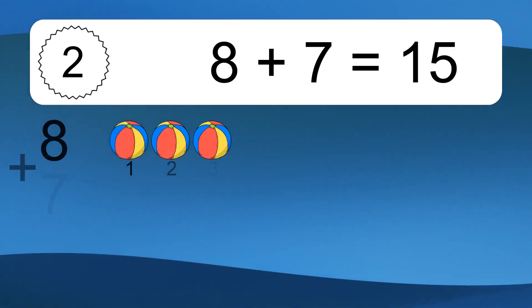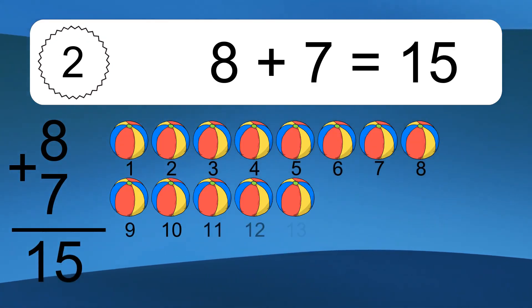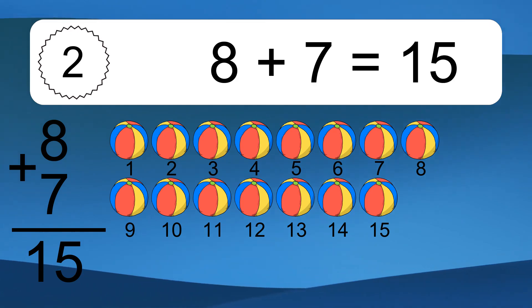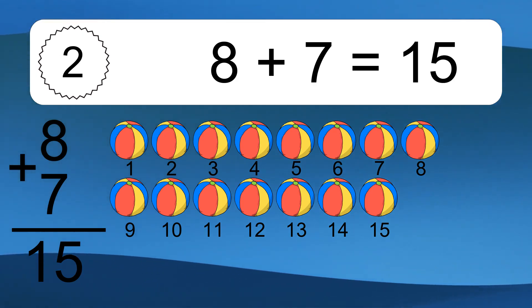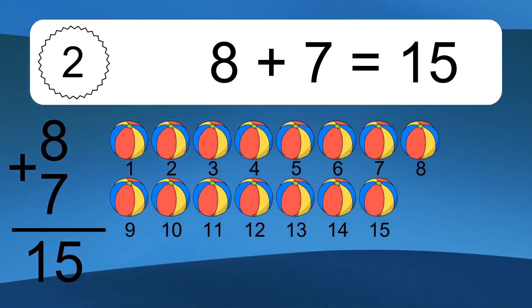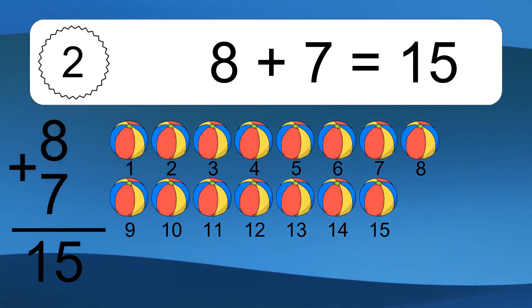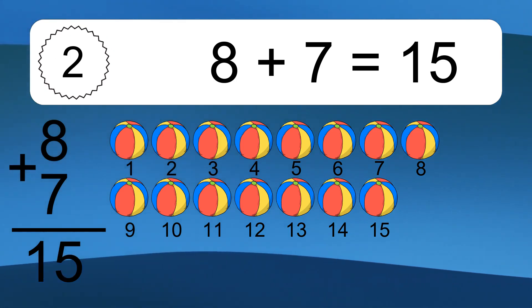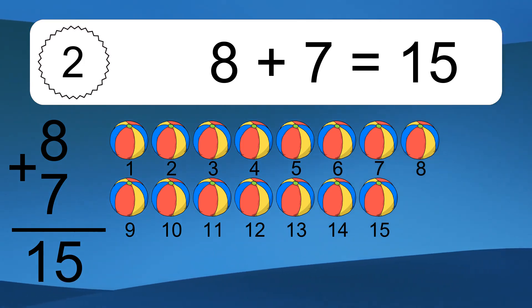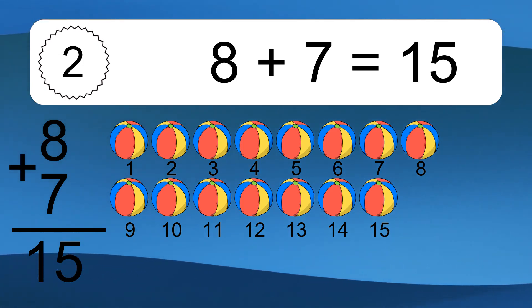8 plus 7 equals 15. Let's count it: 1, 2, 3, 4, 5, 6, 7, 8, 9, 10, 11, 12, 13, 14, 15.